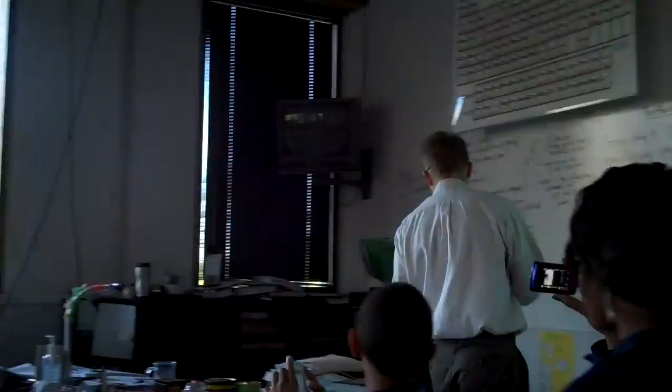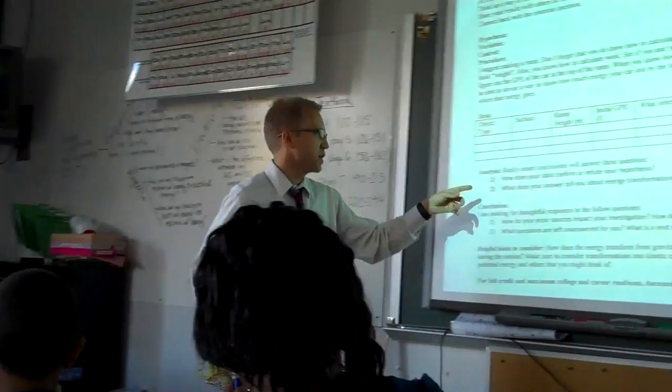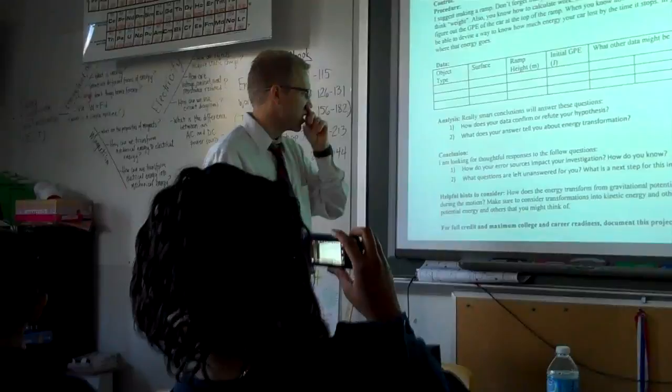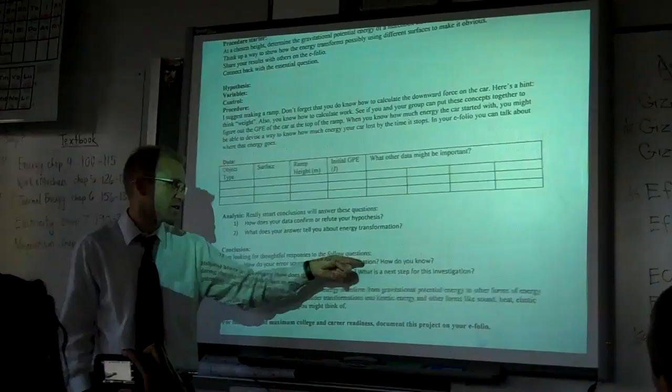I have a picture of a data table, and I have some analysis questions. Here's the data table. And the analysis questions read, really smart conclusions will answer these questions. How does your data confirm or refute your hypothesis? What does the answer tell you about energy transformation? Conclusion. I'm looking for thought-border responses to the following questions. How do you error sources impact your investigation? How do you know? Two. What questions are left unanswered for you? What are the next steps for this investigation?